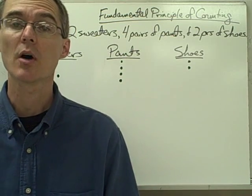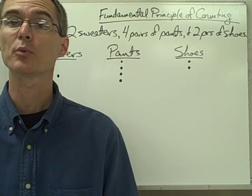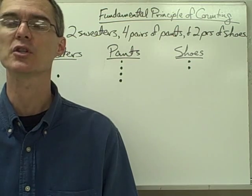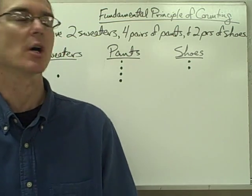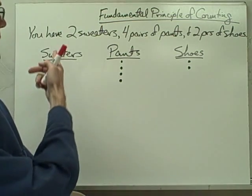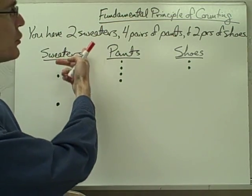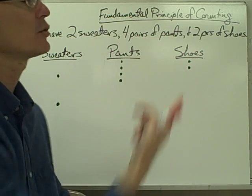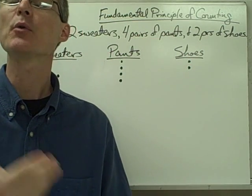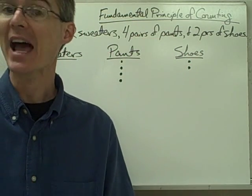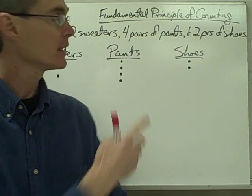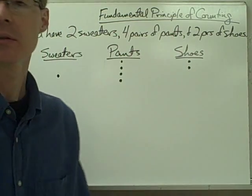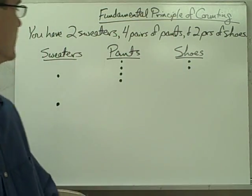In this video we're going to talk about something called the fundamental principle of counting, and we're going to talk about it in terms of an example. Let's say we have two sweaters, four pairs of pants, and two pairs of shoes, and I want to know how many different outfits I can put together using these three different items of clothing.